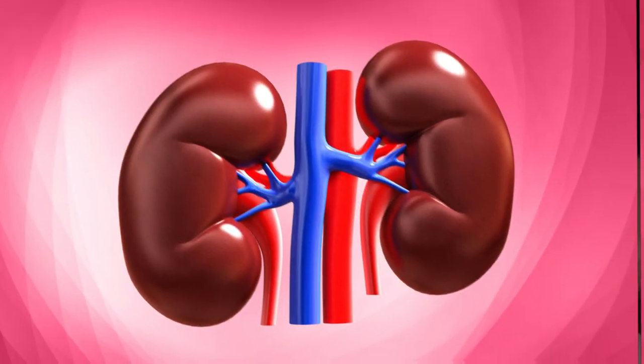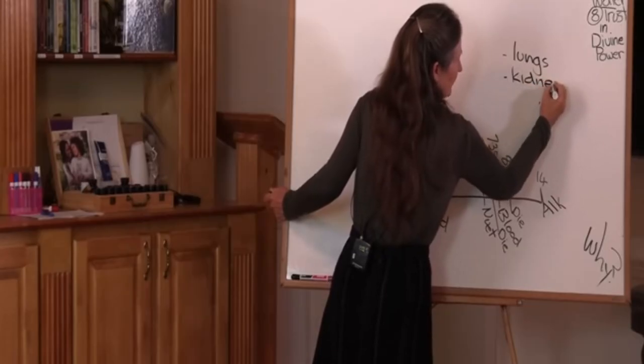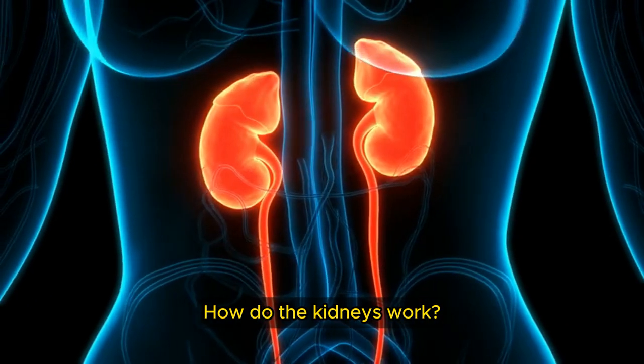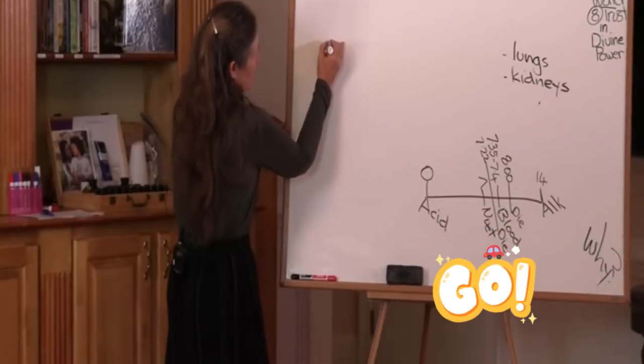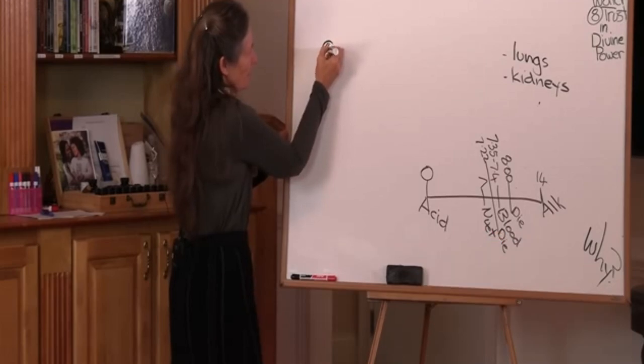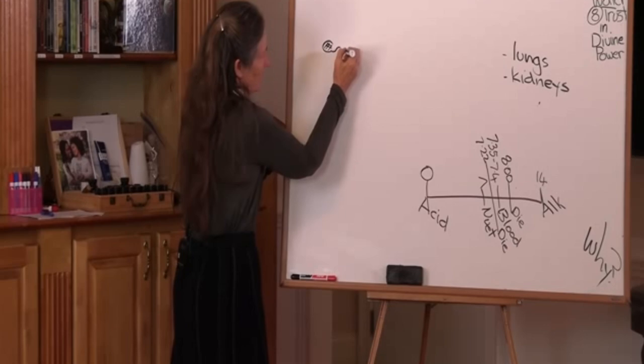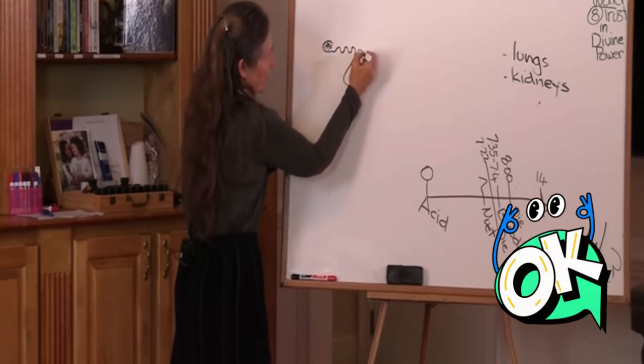The other organ is your kidneys. Your kidneys do this in a fascinating way. How do the kidneys work? Let's go to the smallest unit in the kidney, which is a little nephron. It's a little filtering unit. It's called the Bowman's capsule. And out of the Bowman's capsule, the filtrate comes out.